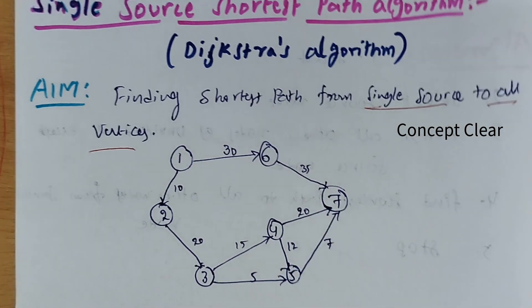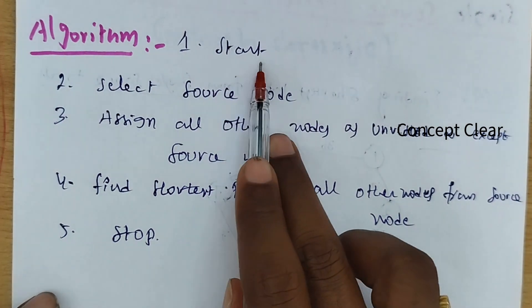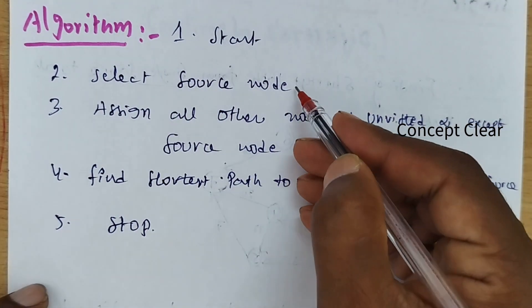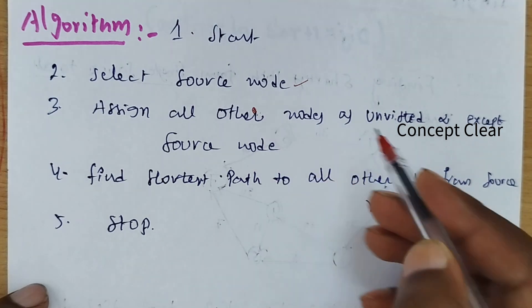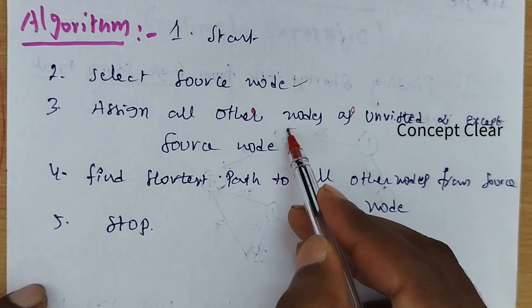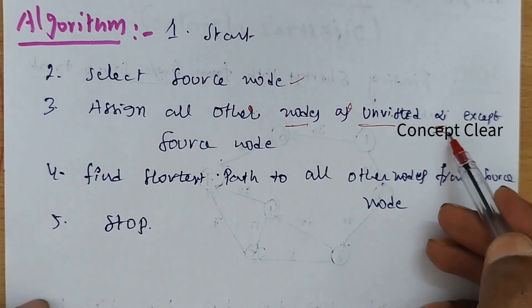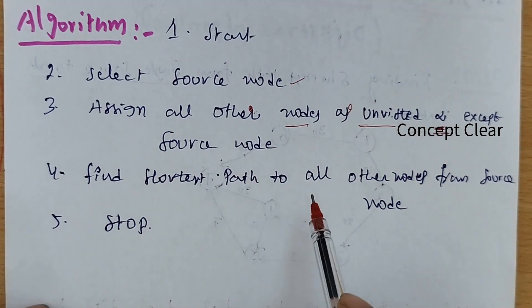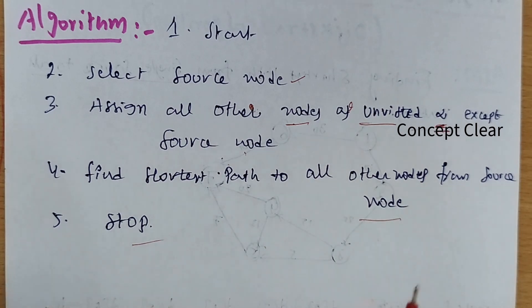What is the algorithm here? The algorithm: first step is start, next is select source — select any source and assign all other nodes as unvisited with infinity, except the source node. Then find out the shortest path to all the other nodes from the source node, and stop.